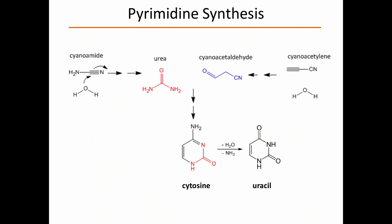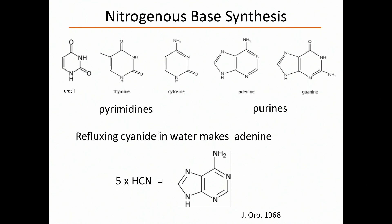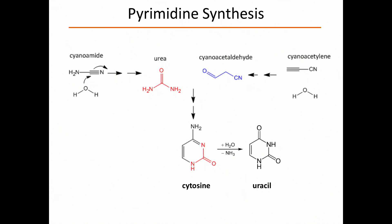For pyrimidine synthesis — again rather simple: cyanamide adds water to form urea, and cyanoacetylene adds water to form cyanoacetaldehyde. These two can react together to form cytosine. And if you hydrolyze cytosine and deaminate — remove the nitrogen — you end up with uracil. So again, under conceivable prebiotic conditions, these molecules could come about. The conclusion: nitrogenous bases do seem to be prebiotically accessible.